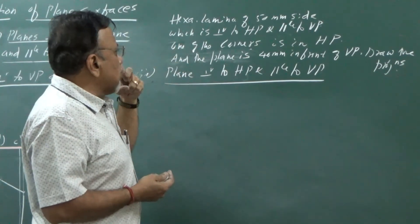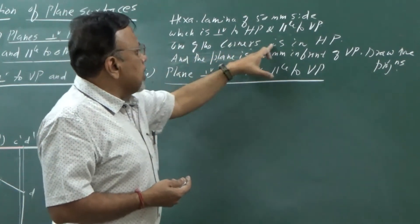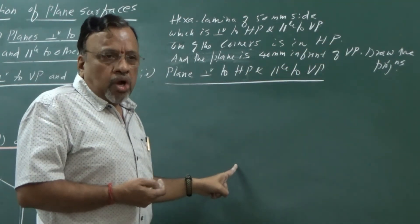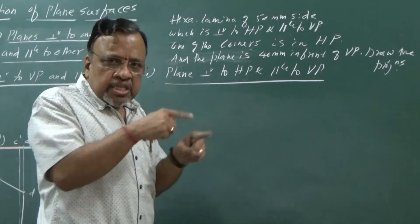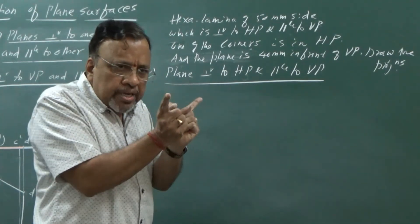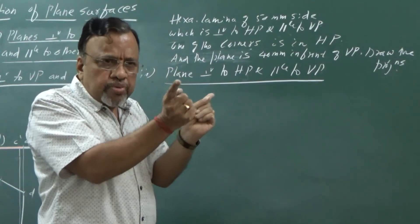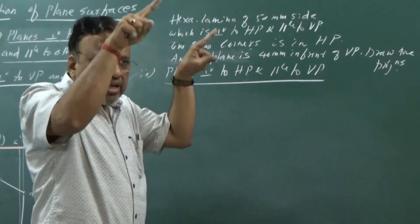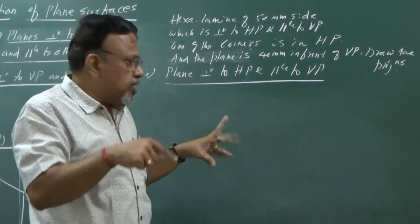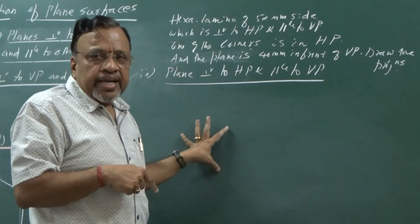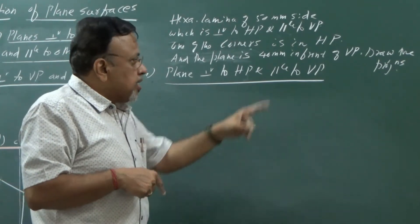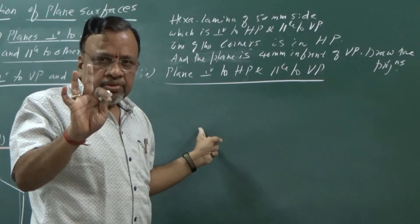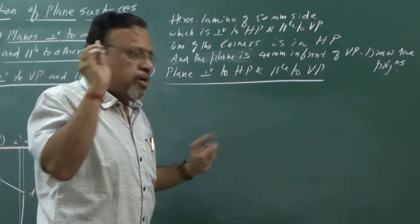Regarding orientation, it is given that one of the corners is in HP. Since a corner is in HP, the two sides passing through that corner will make equal inclinations. Since those two sides make equal inclinations, the other two sides - apart from the corner sides - will be perpendicular. So I want to draw the hexagon such that two sides are vertical.